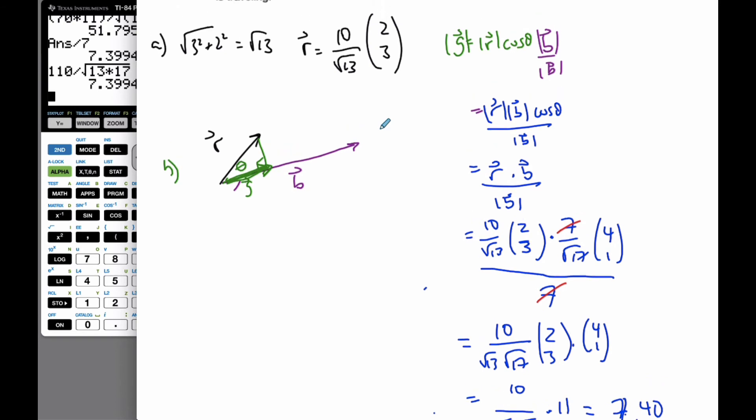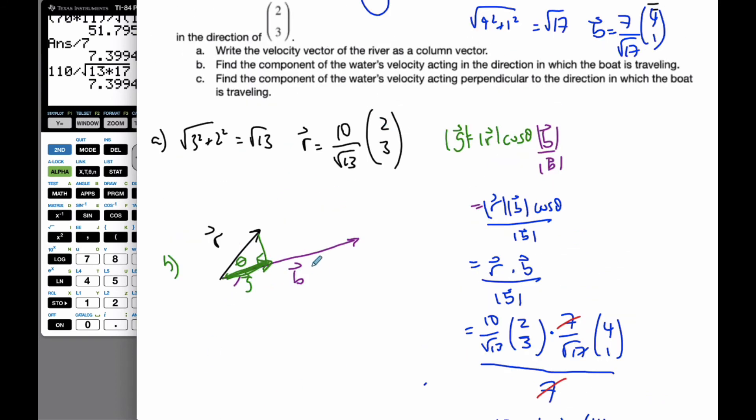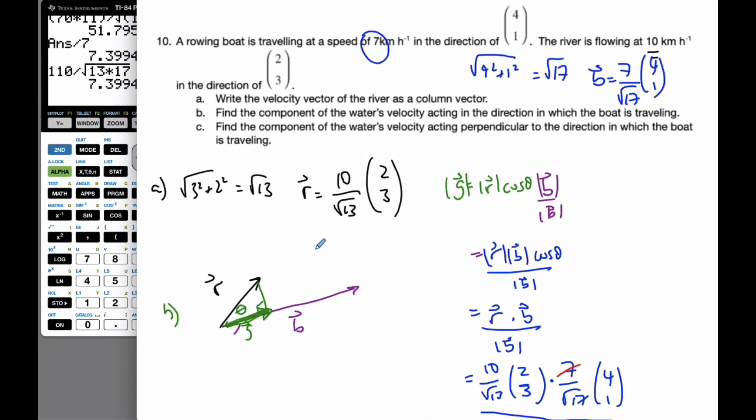So that's how much is going in the direction, the green vector, in the direction of the boat. Now it wants to look at the component of the water's velocity acting perpendicular to the direction which the boat is traveling. Well, that just means we're looking now for this value here.